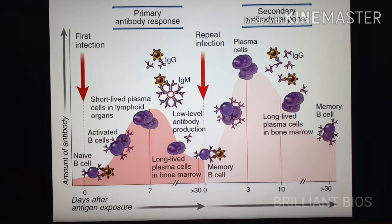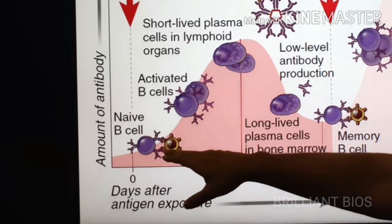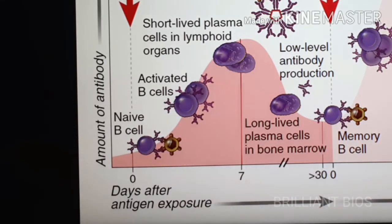What is primary immune response? Primary immune response means when our immune cell recognizes a pathogen or antigen for the first time. When an immune cell recognizes a pathogen or antigen for the first time, it is in the naive condition — naive means these cells have not yet recognized this type of pathogen or antigen.